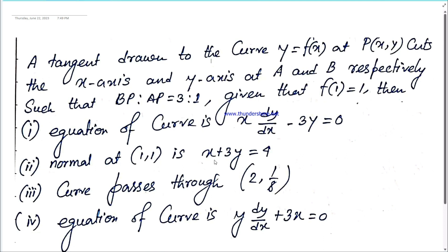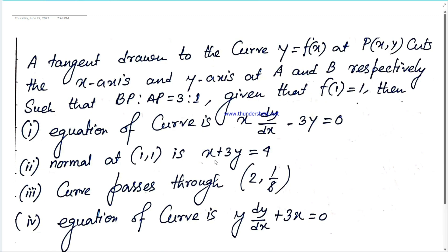The next problem is a differential calculus problem. A tangent drawn to the curve y equals f(x) at point P(x, y) cuts the x-axis and y-axis at A and B respectively, such that BP to AP equals 3 to 1. Given that f(1) equals 1, the options include: the equation of the curve is x·dy/dx minus 3y equals 0; normal at (1,1) is x plus 3y equals 4; the curve passes through (2, 1/8); or the equation is y·dy/dx plus 3x equals 0.